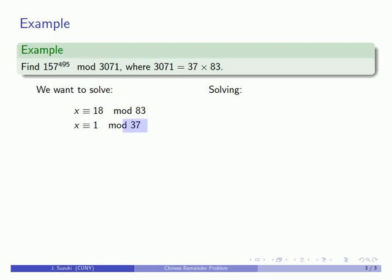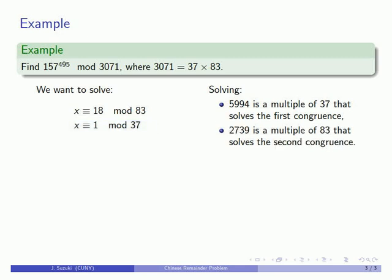First I can find a multiple of 37 that solves the first congruence, that's 18 more than a multiple of 83. That works out to be 5994. Next I can find a multiple of 83 that solves the second congruence, a multiple of 83 that's 1 more than a multiple of 37. 2739 works out. So the sum, 5994 plus 2739, 8733, is going to be a solution to both congruences.